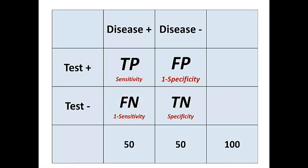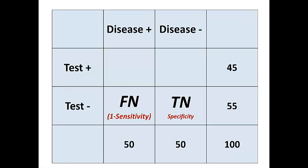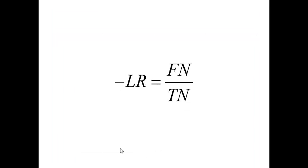Looking at the negative likelihood ratio another way: on the bottom row of the 2x2 table, we have false negatives, which is 1 minus sensitivity, and true negatives, which is specificity. The ratio of these two is the negative likelihood ratio — you can think of it as the ratio of false negatives to true negatives. The same caution applies as with the positive likelihood ratio: use the column percentages, not the raw numbers from the table, or in most cases your calculation will be incorrect.